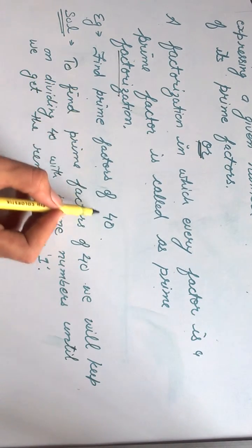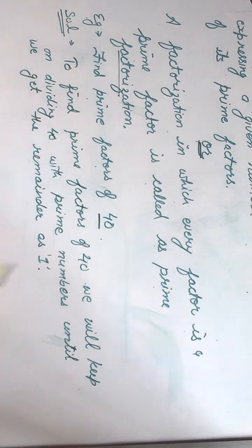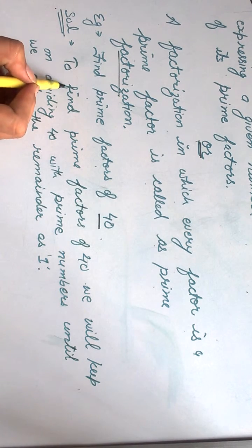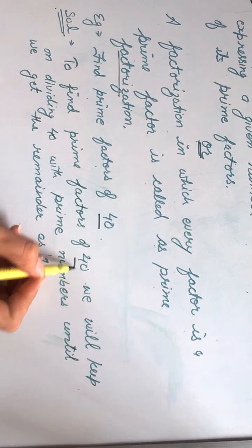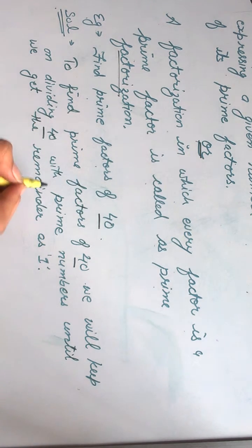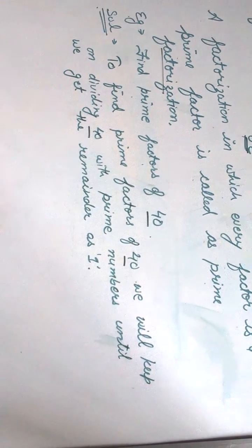Find prime factors of 40, and here we have the solution. To find prime factors of 40, we will keep dividing 40 with prime numbers until we get the remainder as 1, and it proceeds as